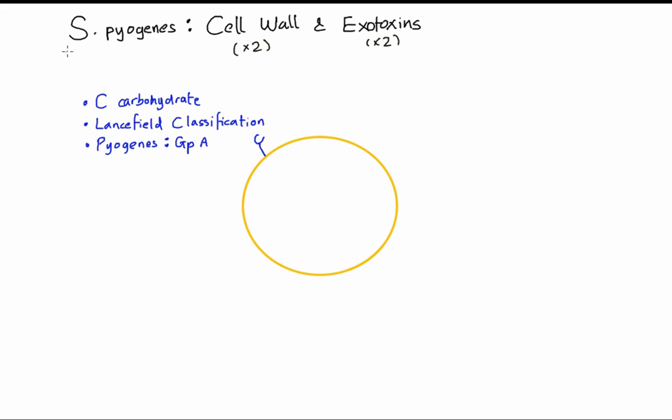The three groups that have this C carbohydrate are strep pyogenes, which is known as group A strep; strep agalactiae, which is group B strep; and the group D streptococci. Another name for strep pyogenes is group A strep or group A beta-hemolytic strep.